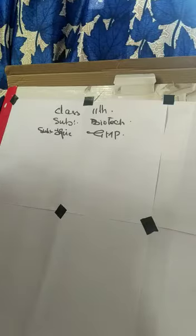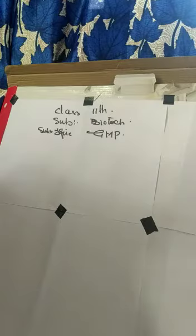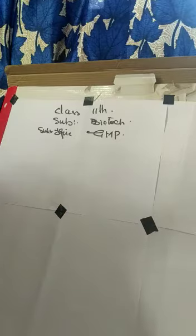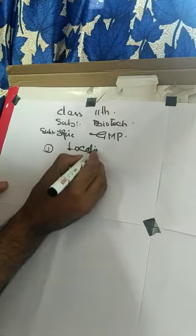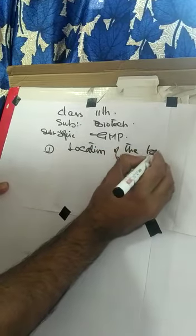We have to take into consideration the tips of scientific approach, and if we adopt this scientific approach properly we will ensure the quality of the product. In this approach, first of all we have to take the location of the building — that means the industry which we are going to install. We have to check this site for the installation of this building. It should be a very good site.